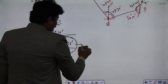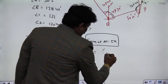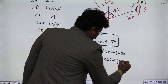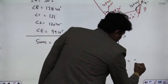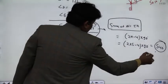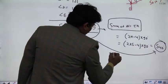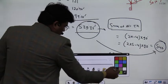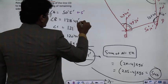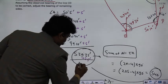The sum of interior angles in a closed traverse is given by (2n − 4) × 90 degrees. Here, n = 5, so it should be 540 degrees. Our computed sum is 539 degrees 35 minutes, so we need to add a correction of plus 25 minutes. Since there are 5 angles, each angle gets a correction of 5 minutes.